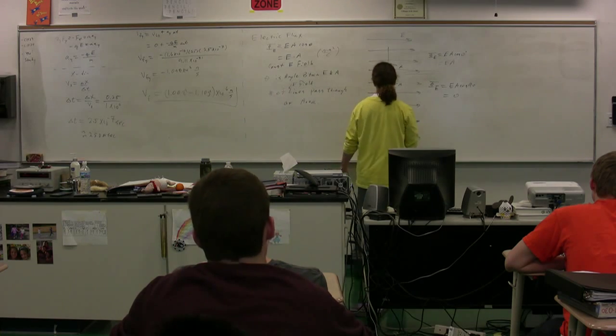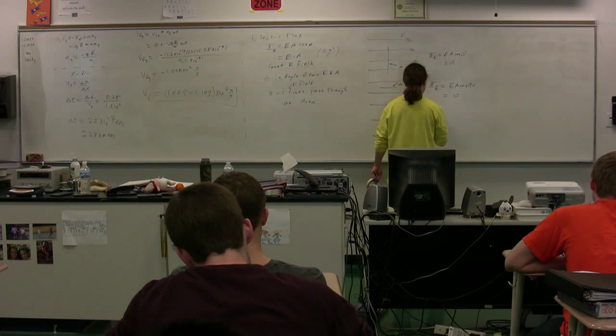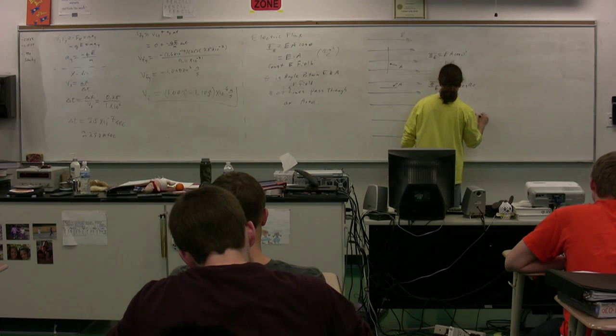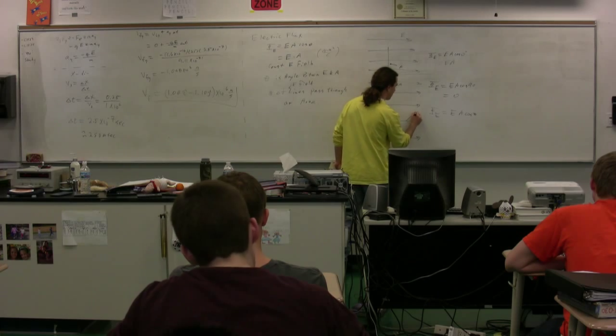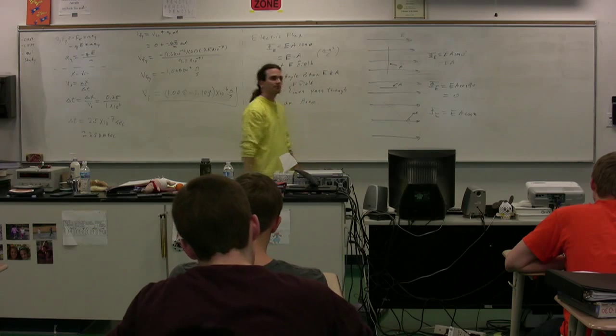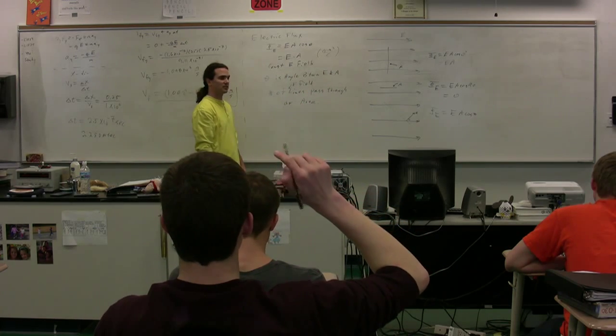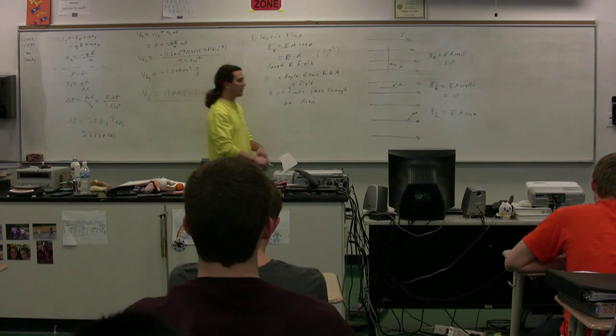And you could also talk about one that would look like this. And then the electric flux would be equal to E A times a cosine of theta, where theta would be defined as the angle located right there. Say again. So why that? Because that's how flux is defined. Because it's normal to the plane of the air.